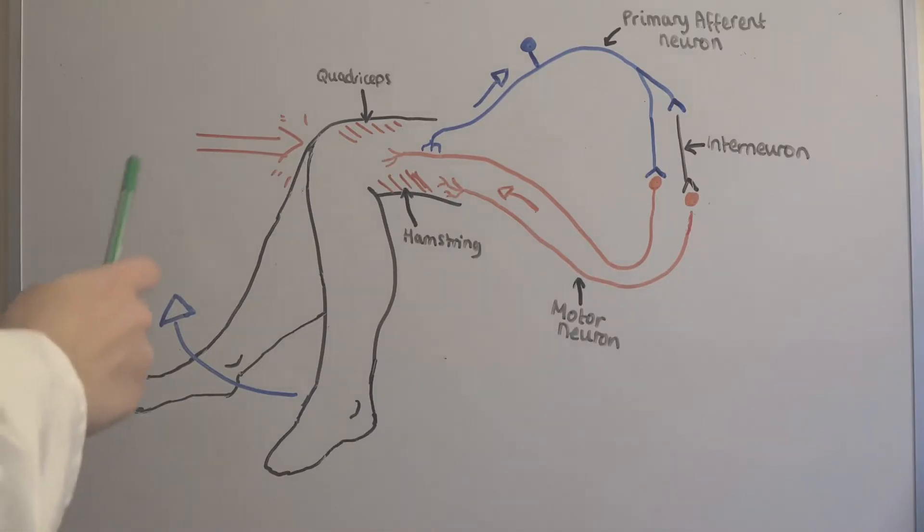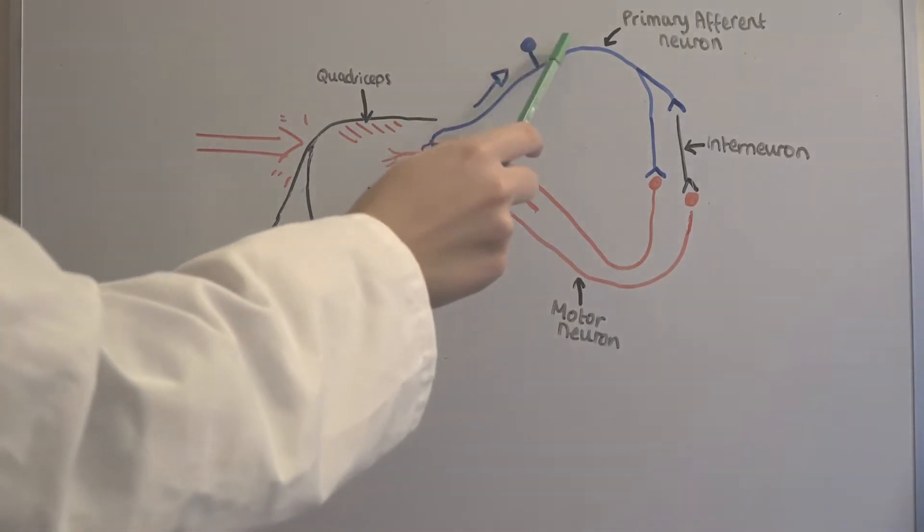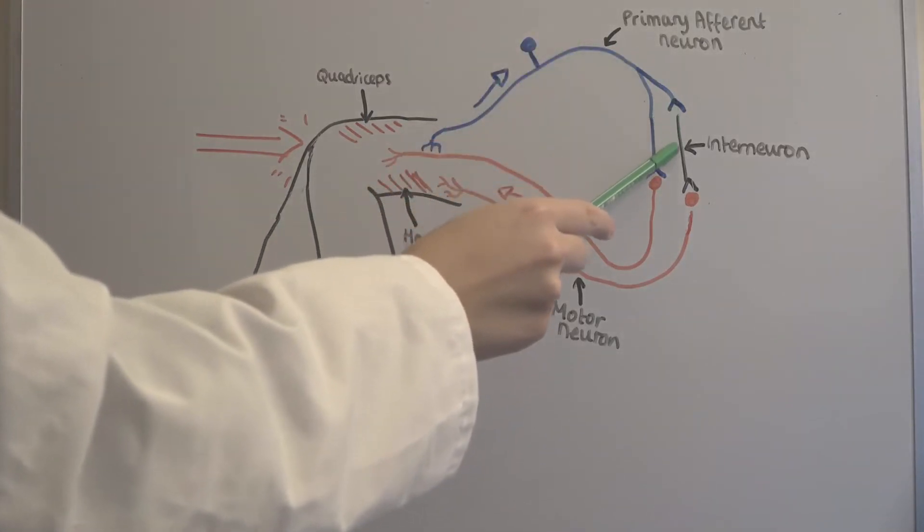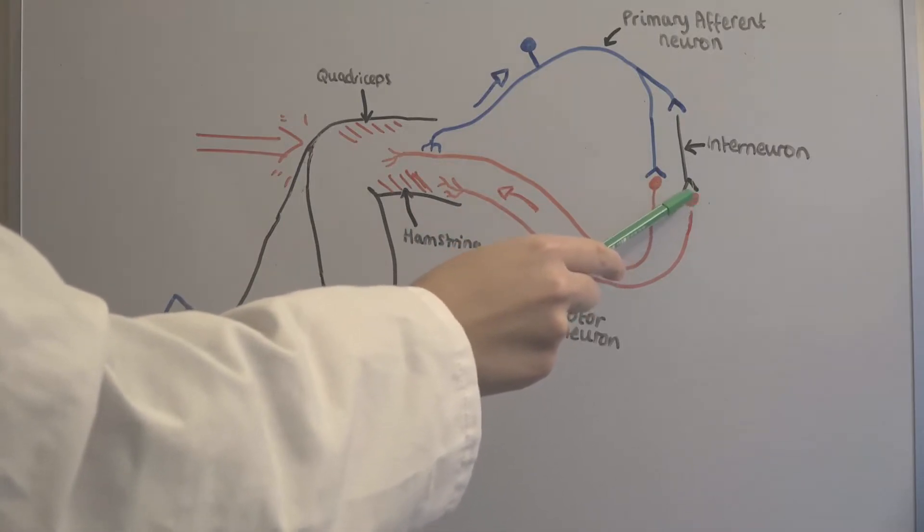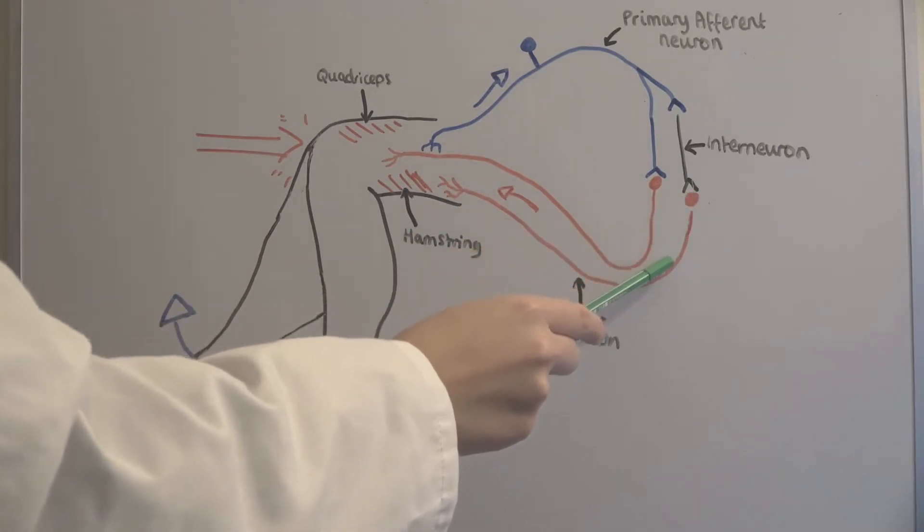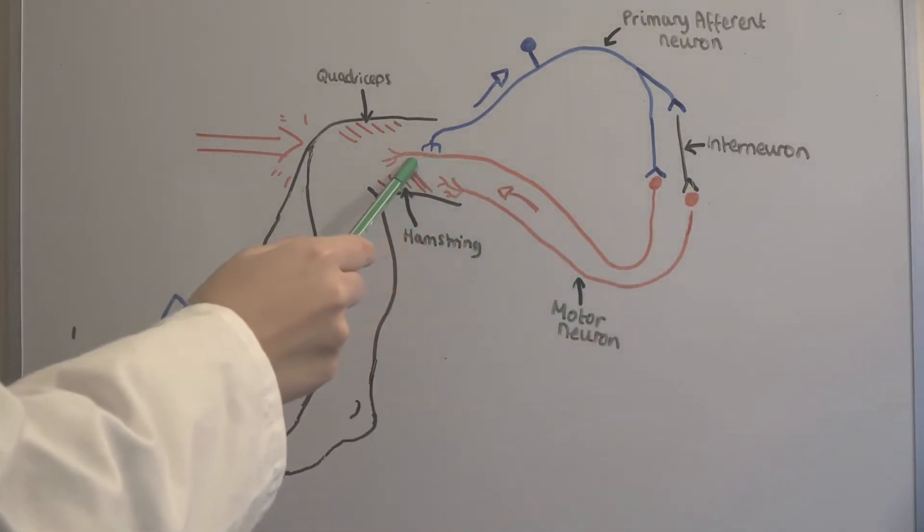A sensory stimulus is detected by tapping on the knee. The primary afferent neuron sends a signal down the dorsal root. The signal then moves through a monosynaptic interneuron towards the ventral root. The ventral root motor neuron then causes a stretch of the thigh extensor muscles, moving the leg.